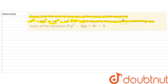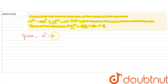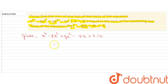The sum of the remaining two roots of the equation p³ - 4pq + 8r = 0. Here the given equation is x⁴ - px³ + qx² - rx + s = 0. This is a bi-quadratic equation, so that means there will be four roots.